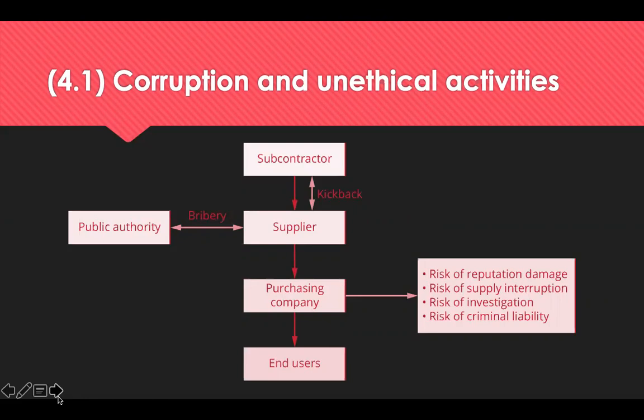Bribery is the act of offering something of value in return for influence in a decision, and it's illegal in many countries but not all. Deception is the deliberate effort to present false information, withhold information, or influence any stage of the procurement cycle in a way that is detrimental to other parties. Abuse of power is when individuals misuse their position.